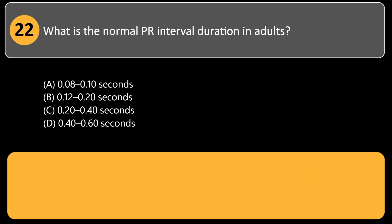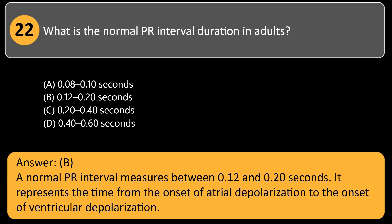It is typically the first upward deflection in a normal ECG cycle. What is the normal PR interval duration in adults? A. 0.08 to 0.10 seconds. B. 0.12 to 0.20 seconds. C. 0.20 to 0.40 seconds. D. 0.40 to 0.60 seconds. Answer: B. A normal PR interval measures between 0.12 and 0.20 seconds.